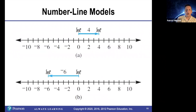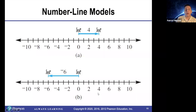Here are some pictures of that. The representation of the number four is the cat walks forward from zero to four. The representation of the number negative six is the cat walks backward from zero to negative six — six units backward.